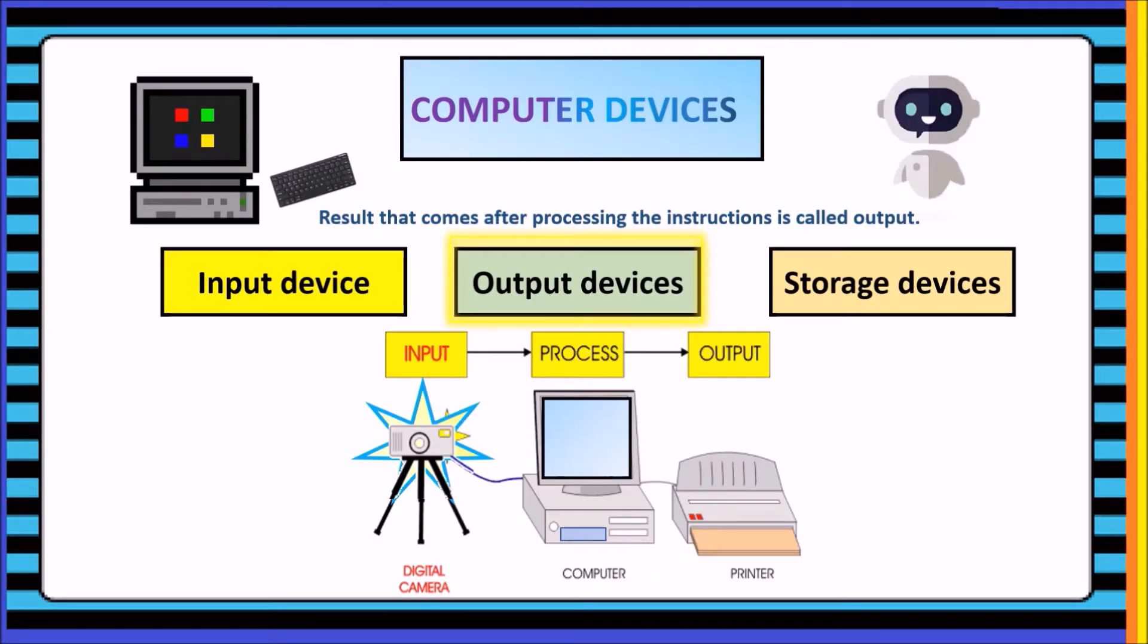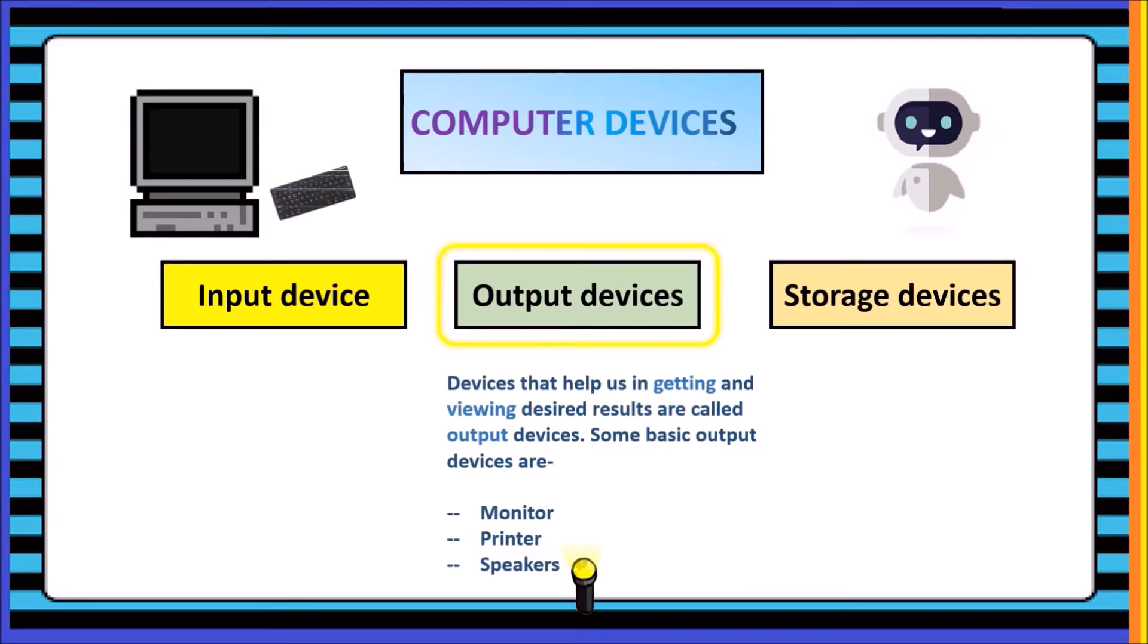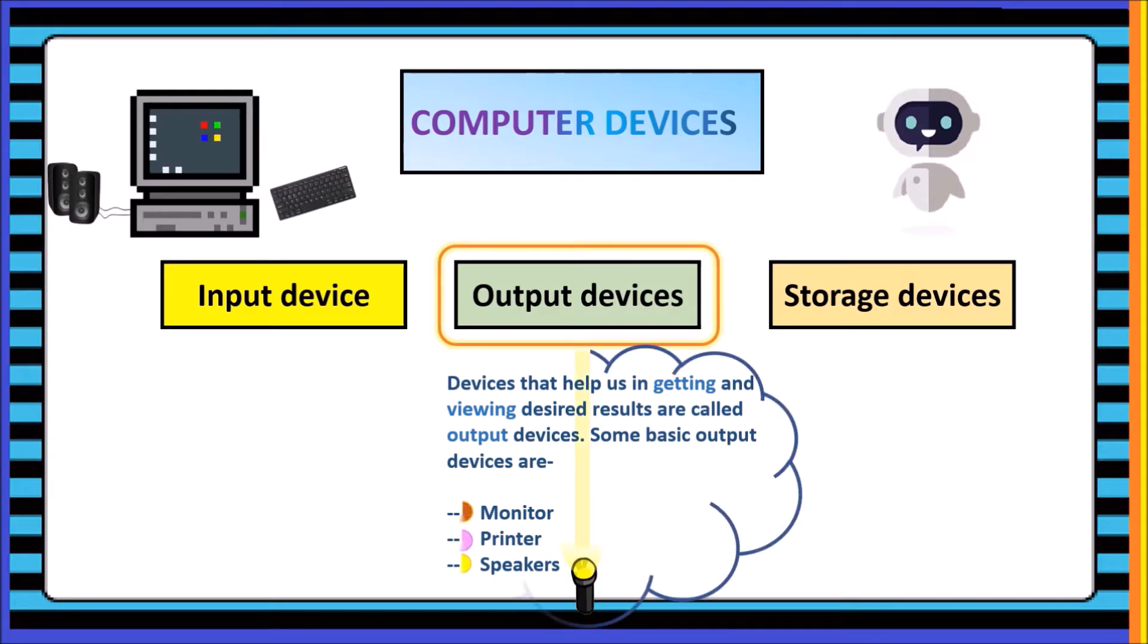Output devices. The result that comes after processing the instructions is called output. The devices that help us in getting and viewing desired results are called output devices.